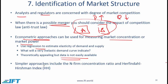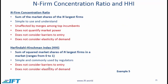The two approaches that you need to be on top of are the N-firm concentration ratio and the Herfindahl-Hirschman Index, or HHI. Here we talk about these two measures: the N-firm concentration ratio and HHI.